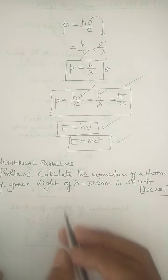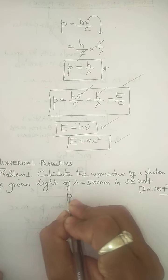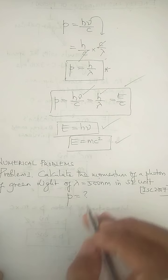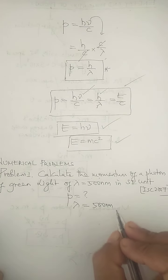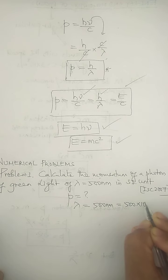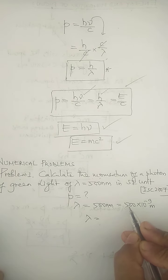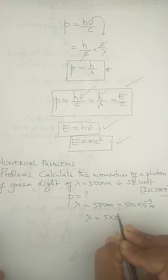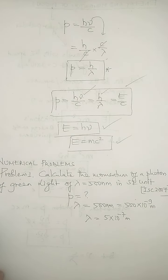Let's start with problem number one — a simple problem based on photon. The question says: calculate the momentum of a photon of green light, where the wavelength λ = 500 nanometers. We convert nanometers to meters: 500 nm = 500 × 10⁻⁹ m = 5 × 10⁻⁷ m. We need to calculate momentum in kg·m/s.